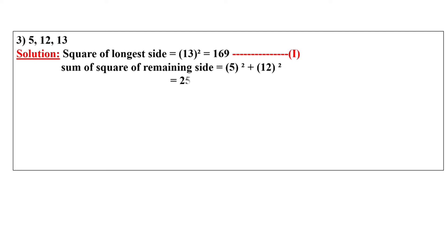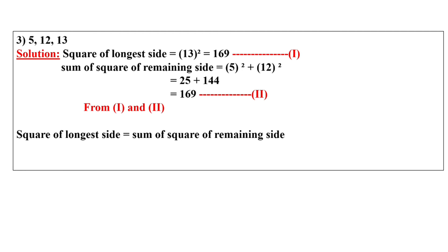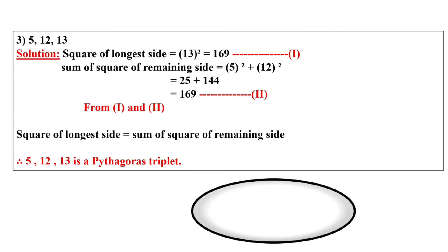5, 12, 13 is given. Longest side is 13; the square of 13 is 169. Remaining sides are 5 and 12: square of 5 is 25, square of 12 is 144, so we get 169. From first and second, square of longest side is equal to sum of the square of remaining sides. So here we can say it is a Pythagorean triplet. Now student, do yourself question number 4, 5 and 6.